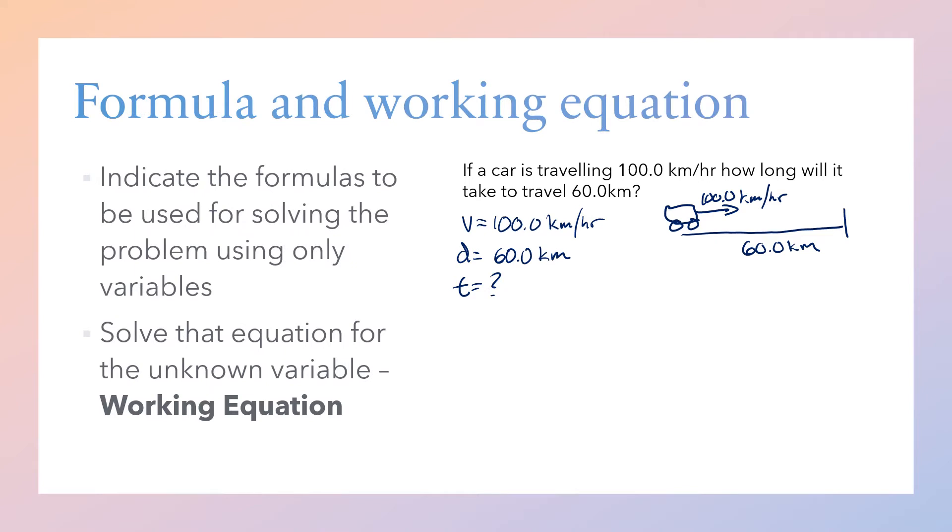Now we're going to write down our formula, called the working equation. The working equation is the equation that is solved for the variable that's unknown. Most of the time I want you to isolate for that unknown variable. You might know that the distance equation is velocity times time, d = vt, but that's not solved for my unknown variable, which is t. So we want to isolate our equation: t = d/v. This is what's called the working equation.